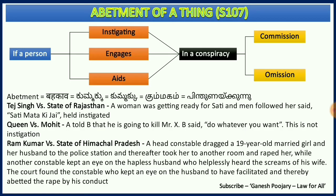Section 107 says: if a person instigates, or engages, or aids — any one of the three is sufficient — in a conspiracy to commit an act, or to omit an act, or to do an act or not to do an act, or for commission or omission of an act, then that person is considered to have committed an abetment.